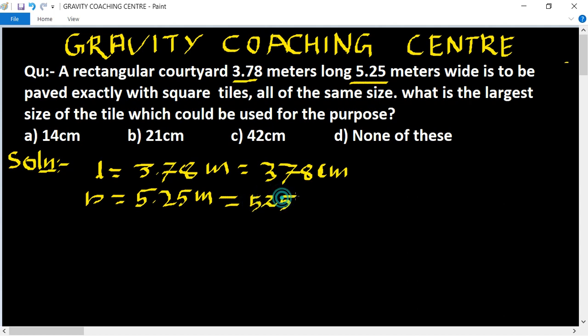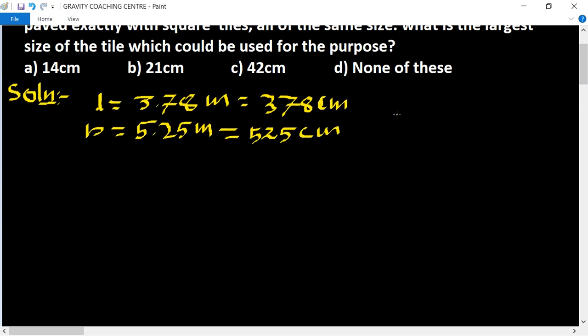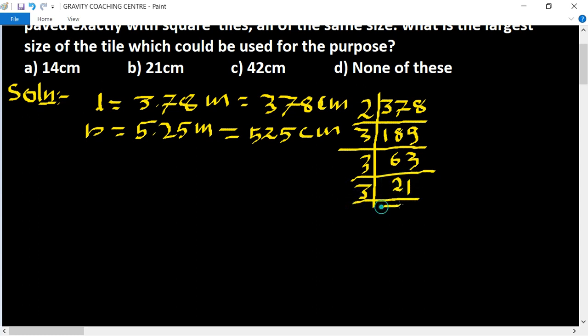Now we will find the HCF. First, 378: 2 goes into 378, giving 189. Then 3 goes into 189, giving 63. 3 into 63 gives 21. 3 into 21 gives 7.